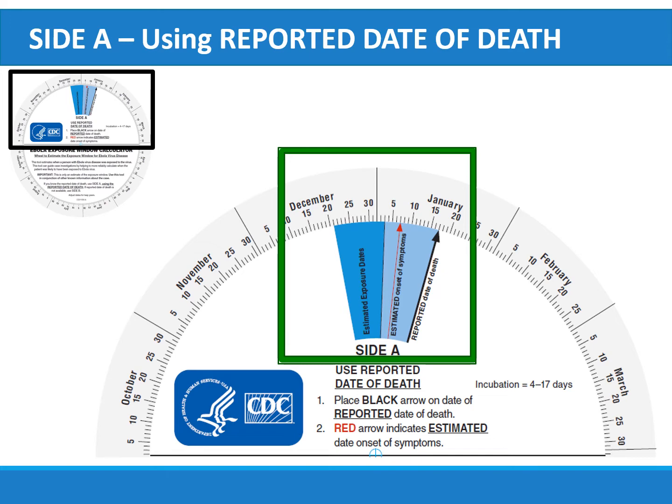To use the wheel, place the black arrow on the reported date of death. In this presentation, the black arrow is on January 17th. By placing the black arrow on the reported date of death, the wheel indicates the date of estimated onset of symptoms as January 7th. As seen here, the exposure window is estimated to be between December 21st and January 2nd.